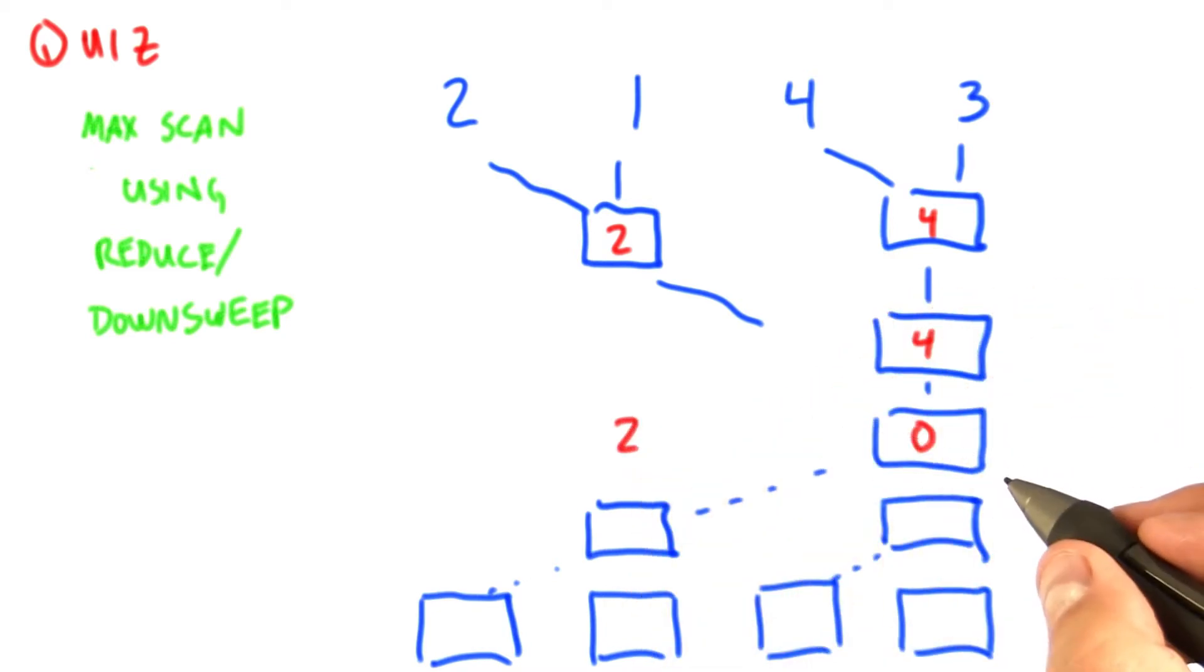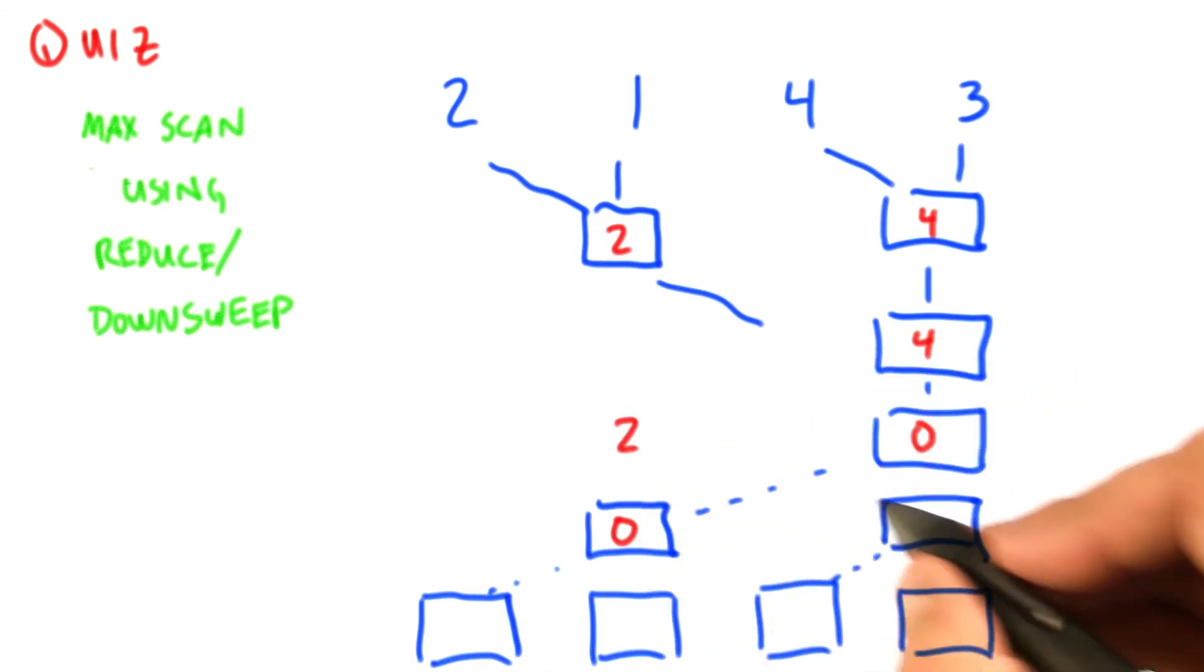So right now we're running our downsweep operator on this 2 and this 0. Okay, we copy the 0 over, and now we run max on 2 and 0 and get 2.